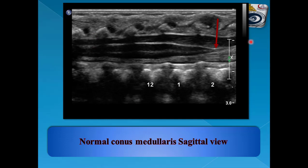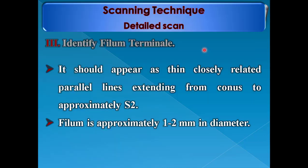Normal conus medullaris at L2 vertebra — the red arrow shows the conus medullaris at L2, which is the normal position. The third question is to identify the filum terminale. It should appear as closely related parallel lines extending from the conus to approximately S2 vertebra. The filum is approximately 1 to 2 millimeters in diameter.